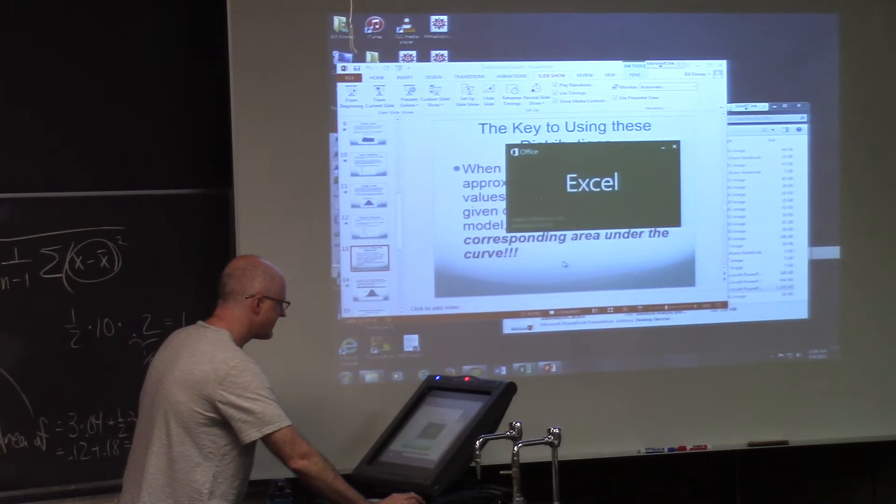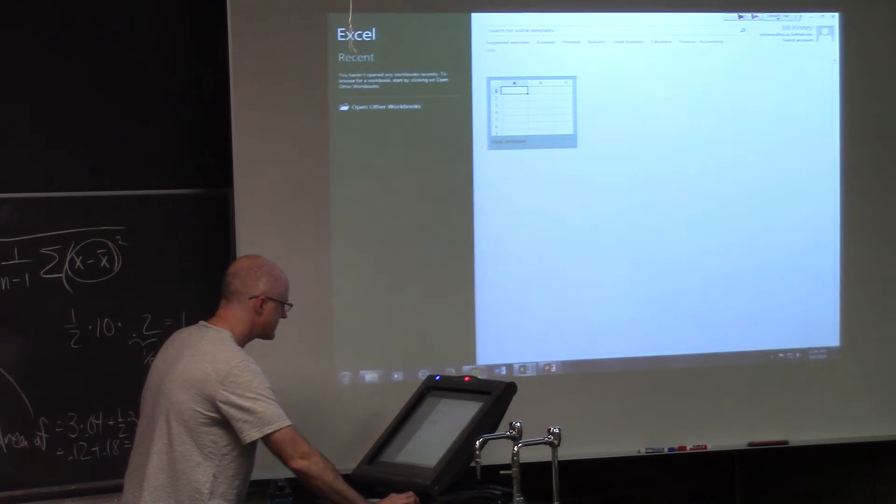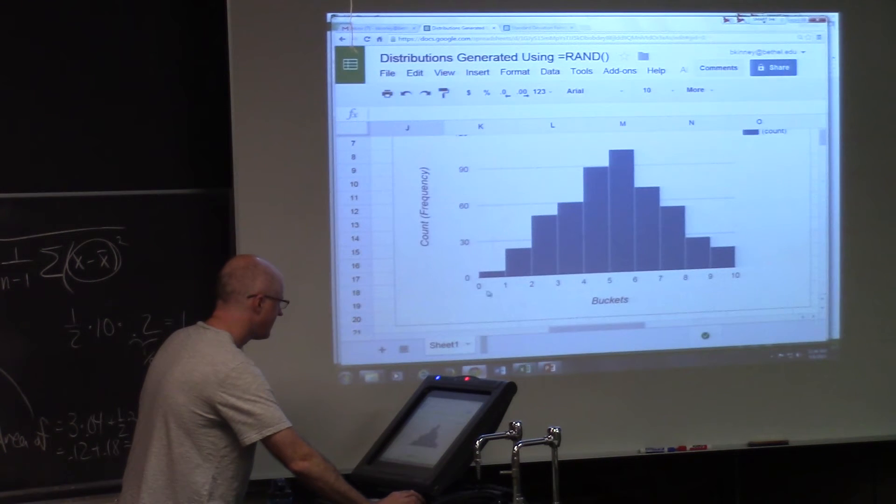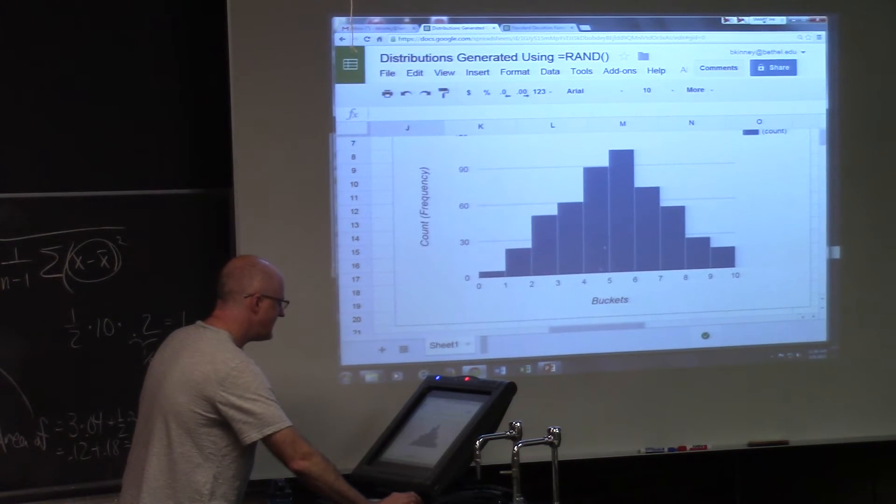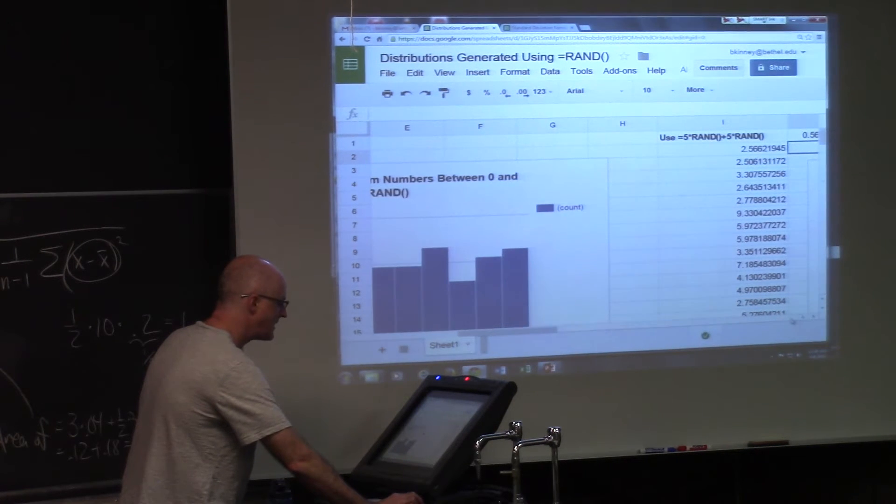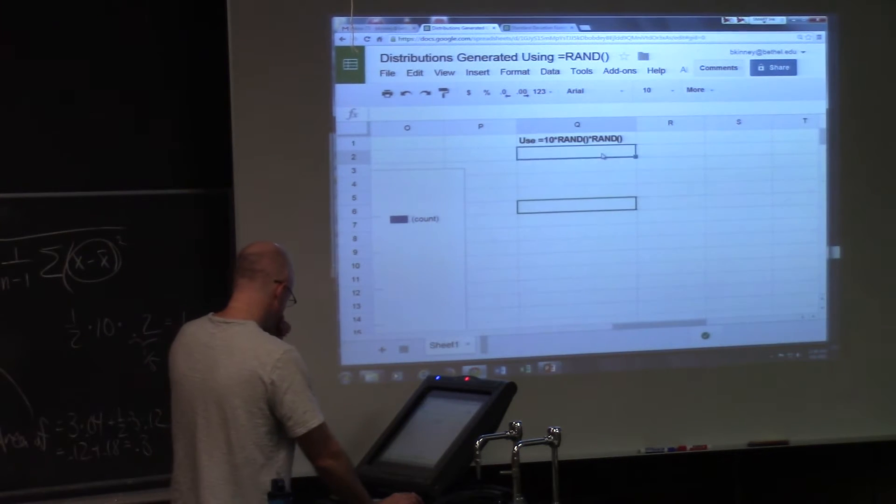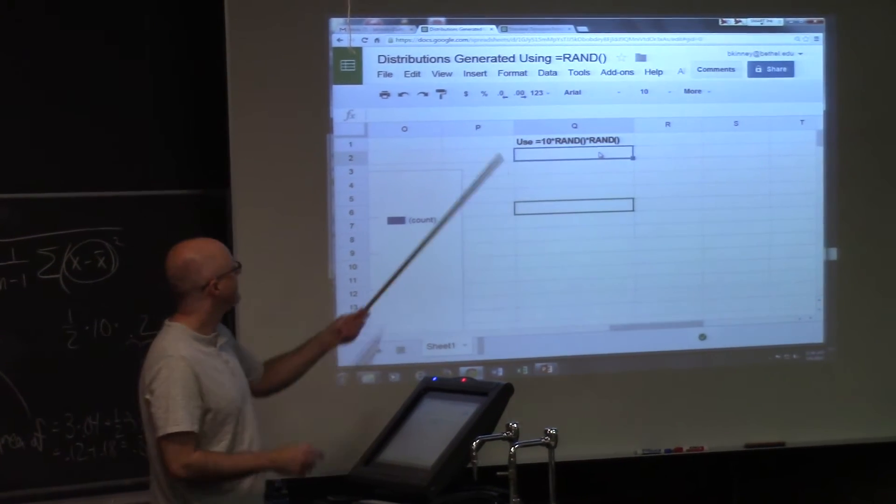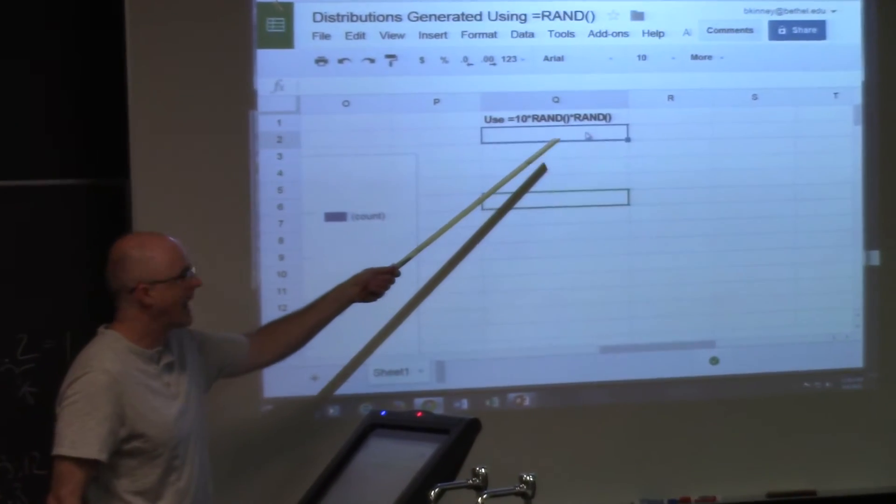The other part of your assignment is going to be using this idea with RAND to make a new column. In fact, I'll show you what to do. That's the formula you're going to be doing, using ten times RAND times RAND.